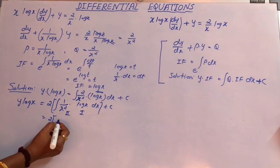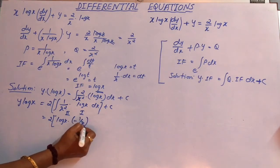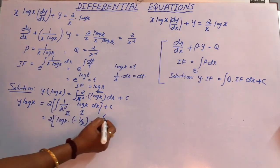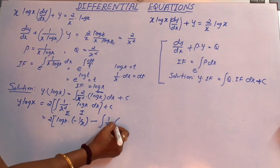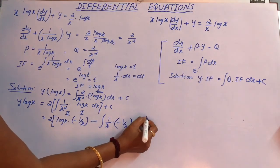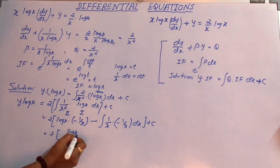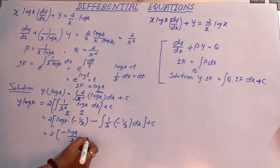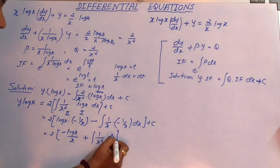Applying the integration by parts formula: keep the first function log(x) as is, multiply by the integral of 1/x² which is −1/x, then subtract the integral of [derivative of log(x)] times [integral of 1/x²]. The derivative of log(x) is 1/x, so we get: log(x)·(−1/x) − ∫(1/x)·(−1/x) dx = −log(x)/x + ∫(1/x²) dx + C.